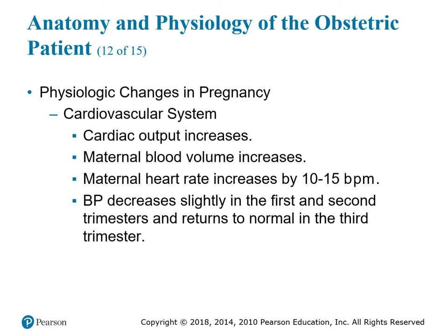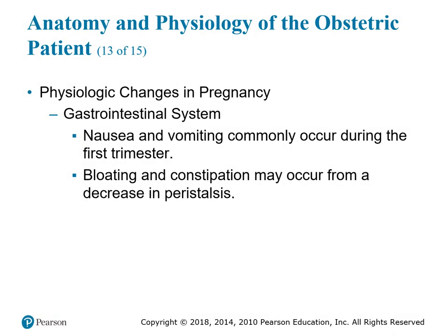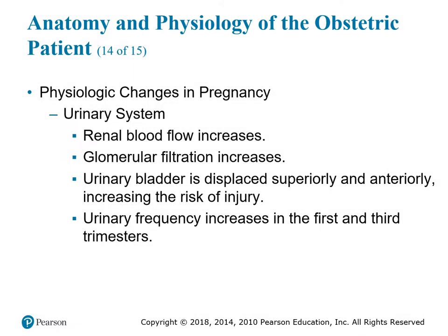In the cardiovascular system, cardiac output increases, maternal blood volume increases, and maternal heart rate increases 10 to 15 beats per minute. Blood pressure decreases slightly in the first and second trimester and returns to normal in the third trimester. In the gastrointestinal system, nausea and vomiting commonly occur during the first trimester, and bloating and constipation may occur from decreased peristalsis. In the urinary system, renal blood flow and glomerular filtration increase, the bladder is displaced superiorly and anteriorly, and urinary frequency increases in the first and third trimesters.